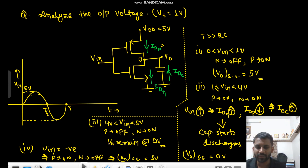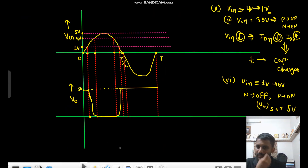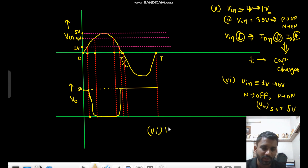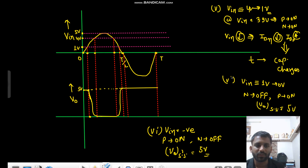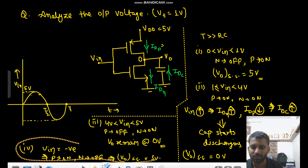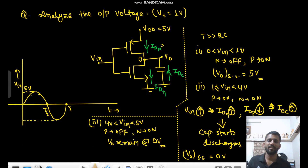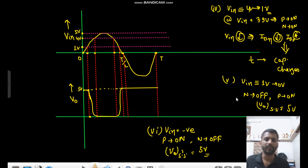This thing written here should come last. This is the 6th point: if Vin is negative, PMOS is on and NMOS is off, so Vnot steady state is 5V. This is the complete analysis. I hope you have understood it — this was a very good question. Thank you.